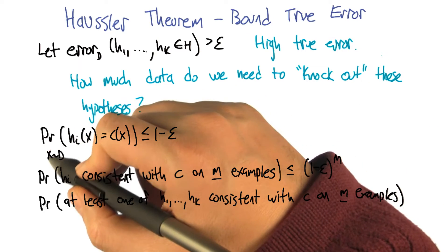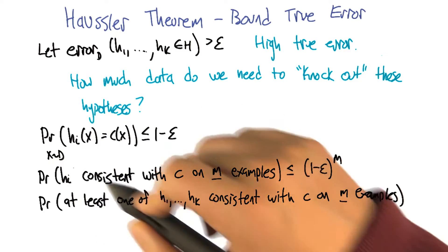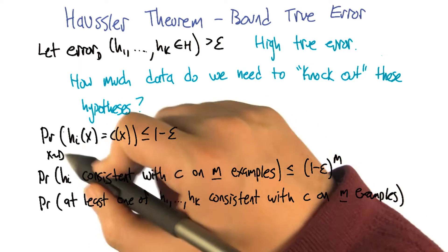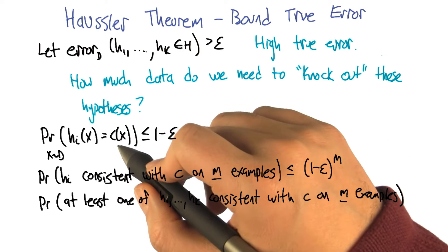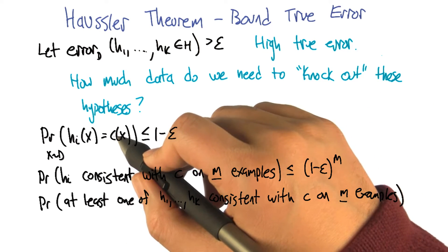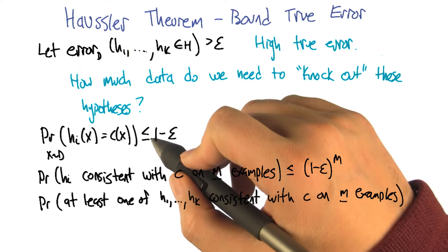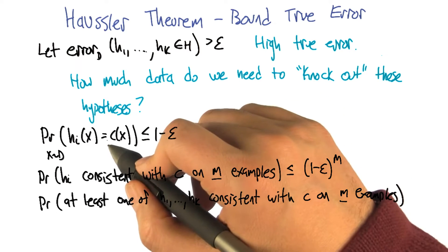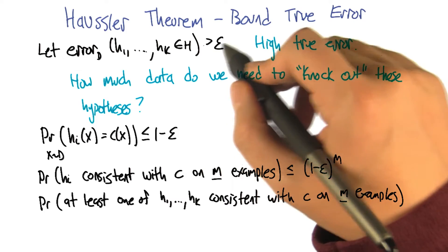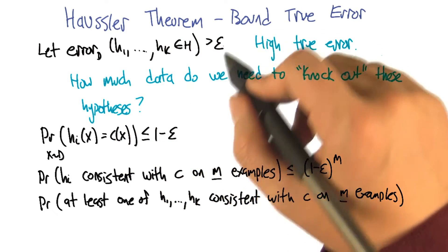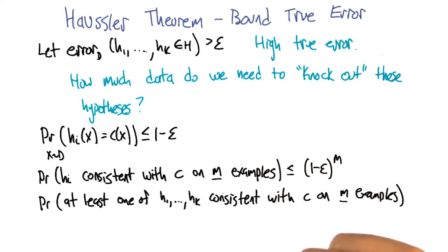All right, so let's take a look at the probability that if we draw an x, an input from this distribution d, that for any of these hypotheses, h_i in this set of bad hypotheses, that it will match the true concept, right? So that h_i(x) is equal to c(x). And we know that that's less than or equal to 1 minus epsilon. It's unlikely that they match because it's relatively likely that they mismatch, right? That's what this exactly means, this error being greater than epsilon. Oh, I see. So if I have an error of greater than epsilon, that means the probability that I'm wrong is greater than epsilon, which means the probability that I'm right is less than 1 minus epsilon. Okay, that makes sense.